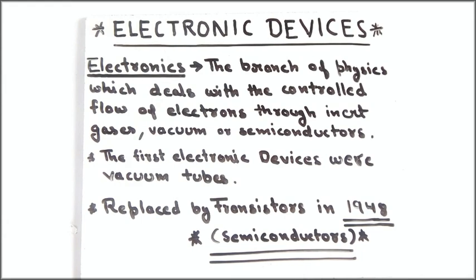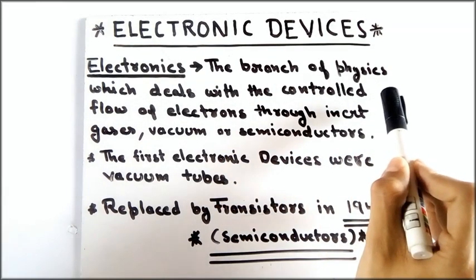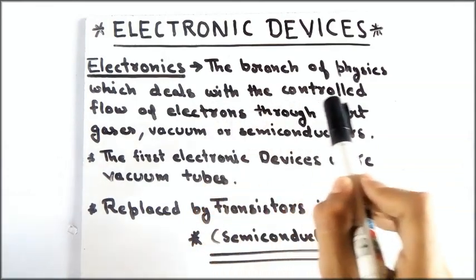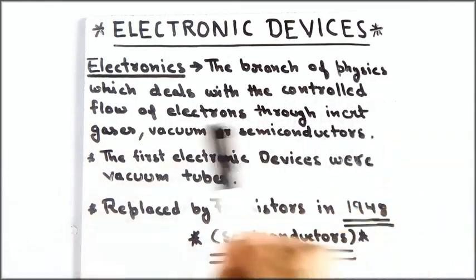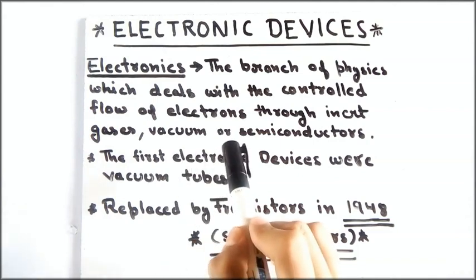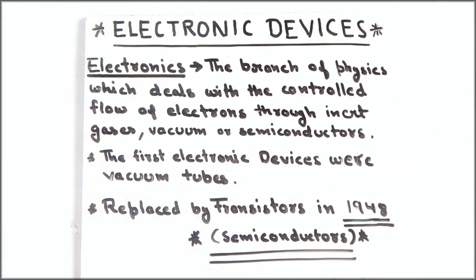So first, what is electronics? Electronics is the branch of physics which deals with the controlled flow of electrons through inert gases, vacuum, or semiconductors. Electronics deals with the controlled flow of electrons so that we can use electrons as units 1 and 0, and all computers work on zeros and ones.